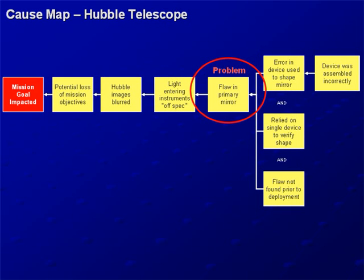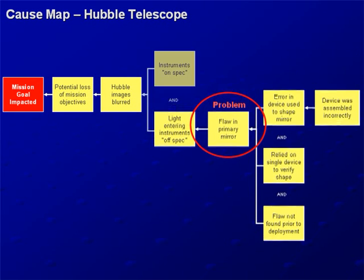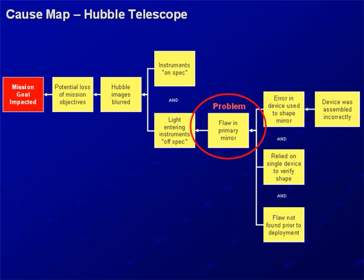If you look at the cause 'Hubble images are blurred' and ask why it happens, it's definitely because the light is out of focus — the light entering the instruments is off-spec — and the instruments are on-spec. Meaning for the images on the Hubble to be blurred, the light has to be out of focus or off-spec, and the instruments have to be on-spec. People look at this and say isn't the error that the mirror is flawed and that causes the light to be out of focus? That is definitely a problem and a bad thing. But for the images to be blurred, the light must be off-spec and the instruments must be on-spec. They're both required for the images to be blurred. If both of those are required — meaning they're both causes — then you can potentially control either one.